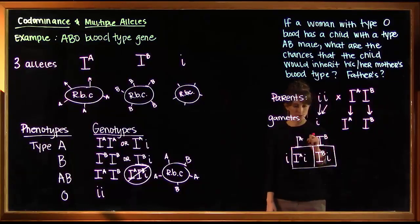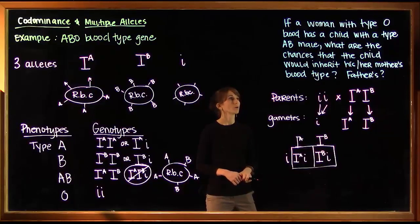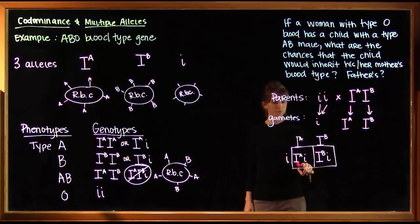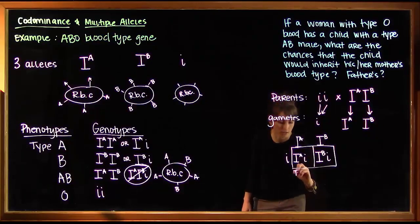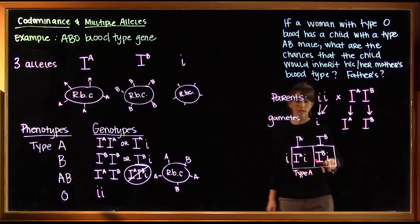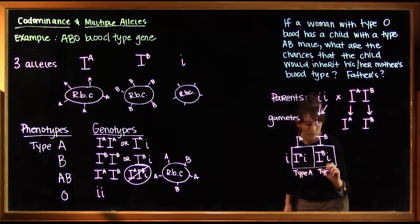Fill in our squares and then answer the question, what are the chances that the child would inherit his or her mother's blood type? So in this first square, we have a child that is IA with a little i, so that would be a type A child. And over here, we have IB with a little i, so that child would have type B blood.